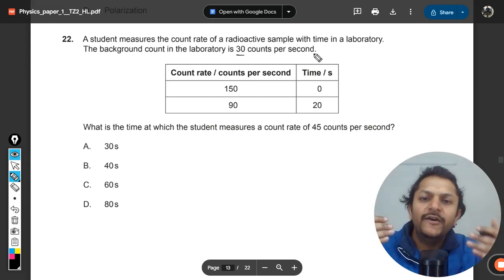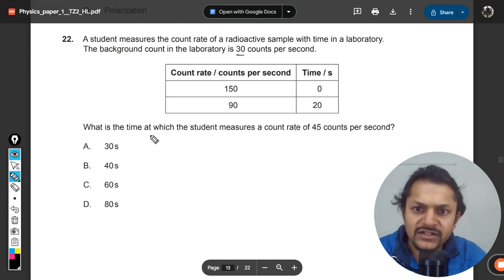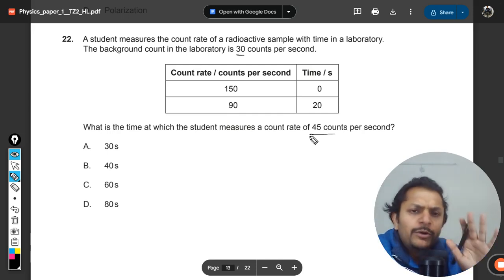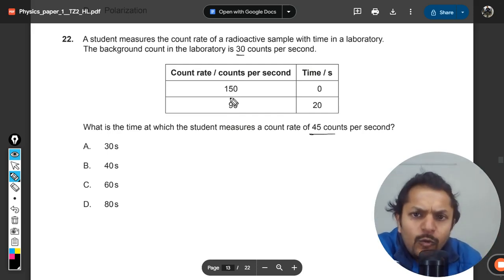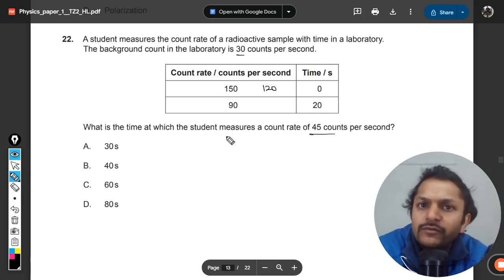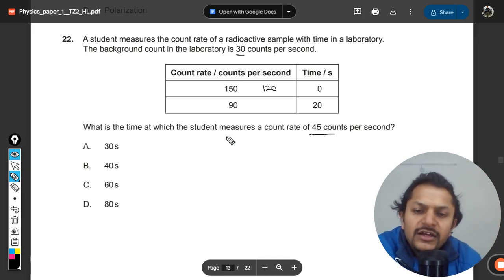The table is given. What is the time at which the student measures the count rate to be 45? Be very particular about this. 150 is the count rate, so the actual number of disintegrations is 120 (150 minus 30), because 30 is the background count which was recorded just like that. 90 minus 30 is 60.